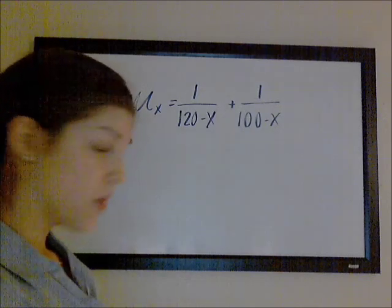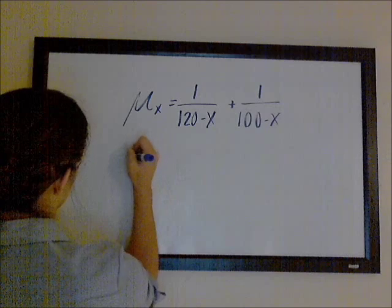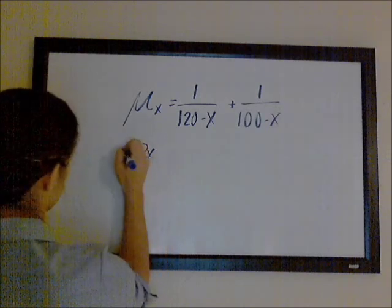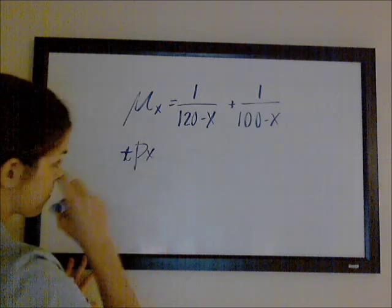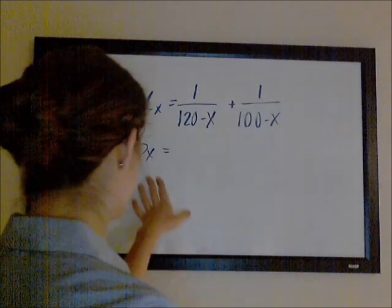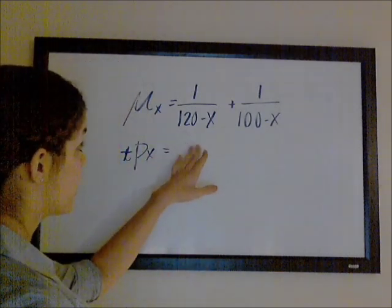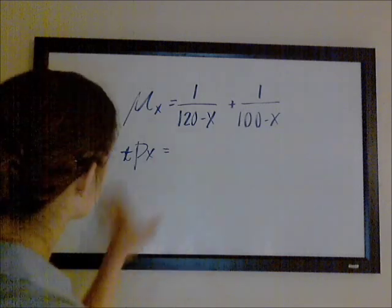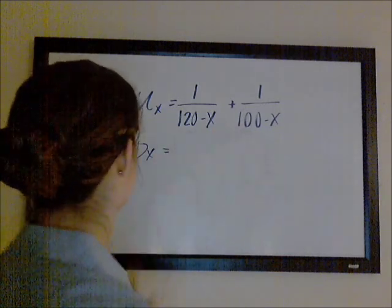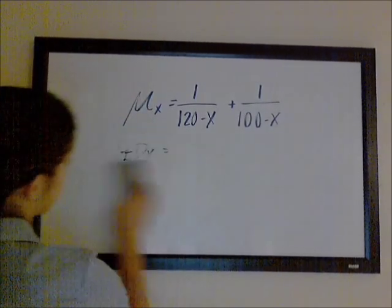So what you can do is, if you're looking for a survival probability, it's going to equal the product of the corresponding tPx values for each of these forces of mortality.